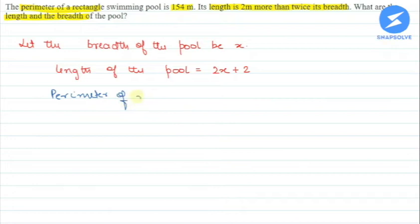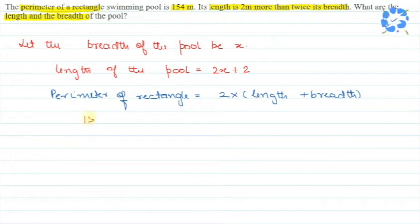So now we know that perimeter of rectangle is equal to 2 times length plus breadth. So now I can write here the perimeter of rectangle we have in question: 154 equals 2 into length we have 2x plus 2, breadth we have x.